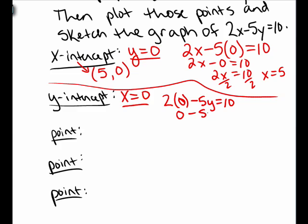We have 0 minus 5y equals 10, or simply negative 5y equals 10. Divide both sides by negative 5 to get y equals negative 2. So the y-intercept is the x-value of 0, y-value of negative 2. It's the point 0, negative 2.